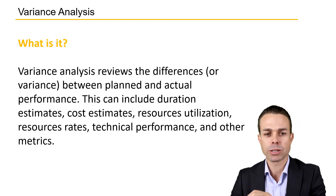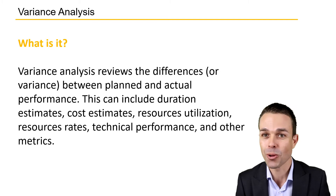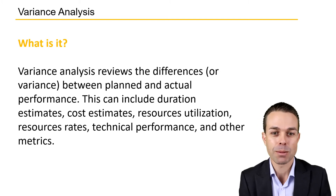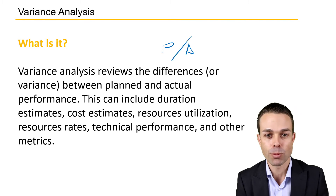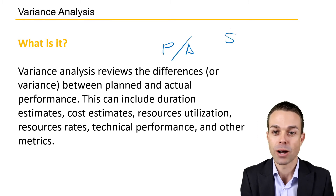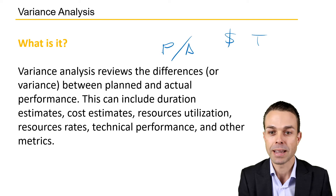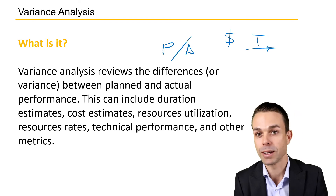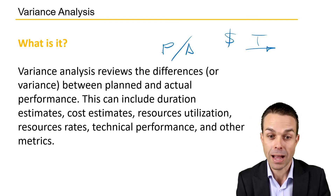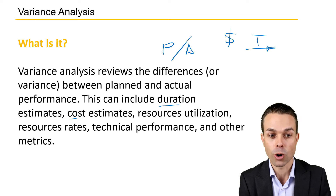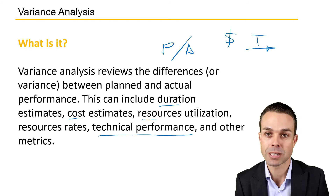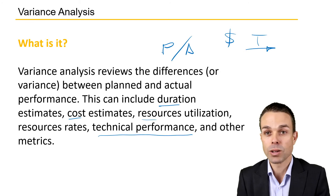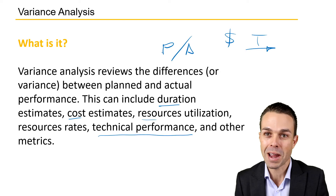Variance analysis is basically reviewing the differences, or the variances, between the planned and the actual results — the performance. That performance could be in our cost or in the time or schedule of our project. As you can see: duration estimates, cost estimates, resources, technical performance of our project, and other activities and metrics — all of these things will differ from the way that we have planned.